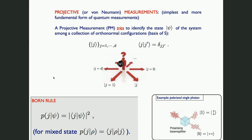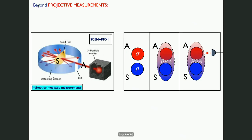This is a very basic notion of measurement, useful but not capturing all possible measurements on a quantum system. In many cases of physical interest, you don't have direct access to the system S itself. Instead, you introduce an ancillary system A prepared in some state sigma, couple it to the system of interest through some process, and at the end measure A. You are using A as a probe to test the state of S.